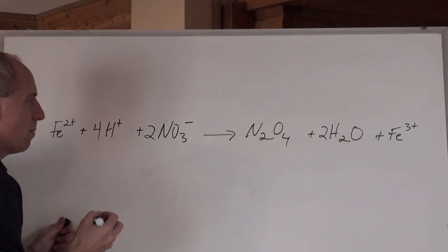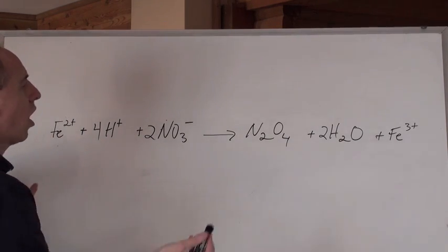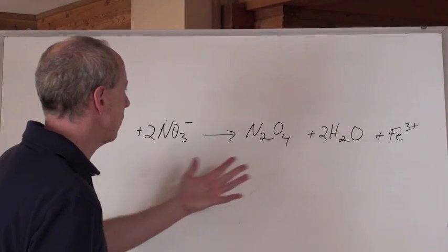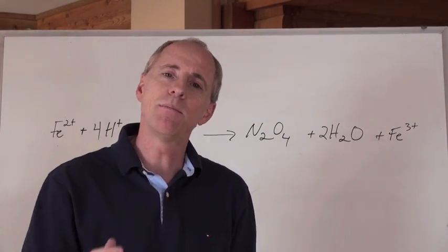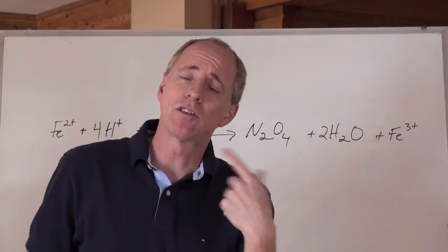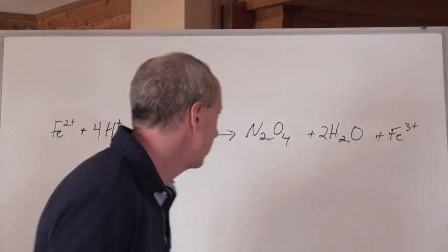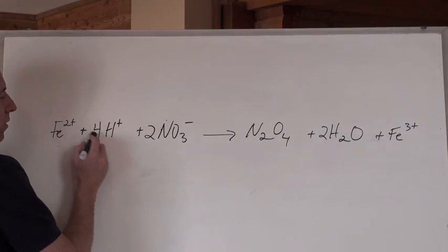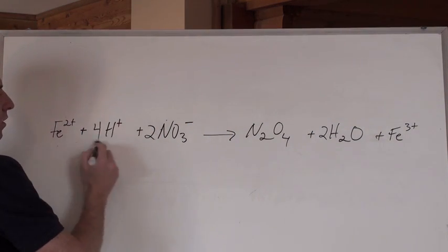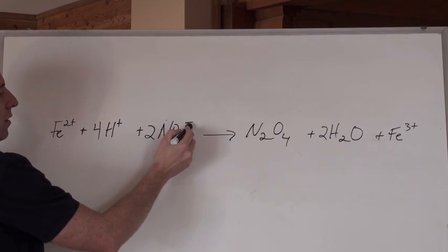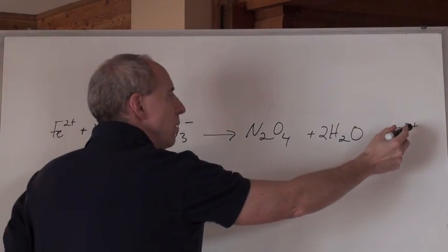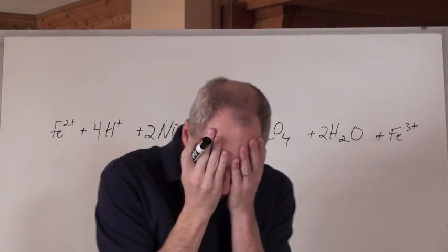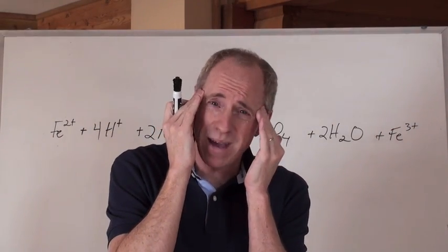Now, should we be balanced here? Well, we're balanced atomically, so that looks like everything is going to be great. So, I'm done. No, because you see, like I said before, that last one, you've got to balance atomically and electrically. Now, take a look. 2 positives and 4 positives make a total of 6 positives. And 2 negatives? Well, that makes a total of 4 positives on this side. And there's 3 positives on this side. Oh, no, no, no. It's not balanced electrically, which means it's not balanced.